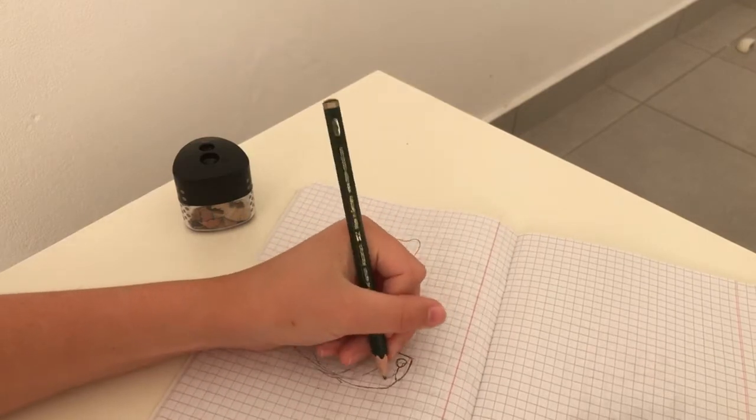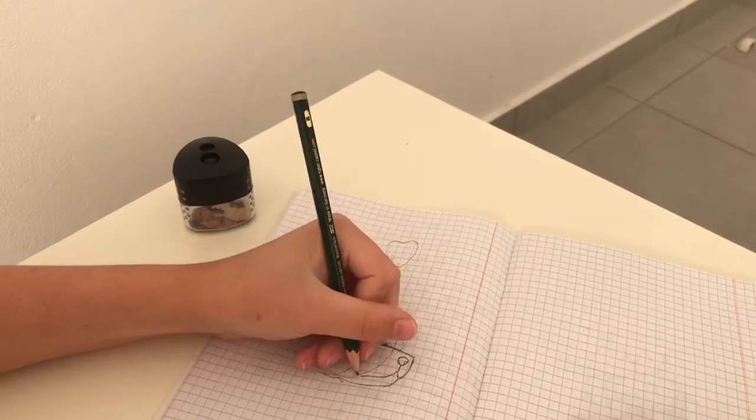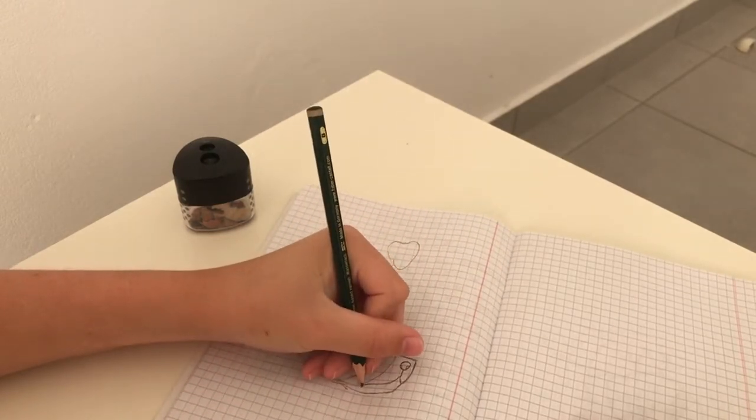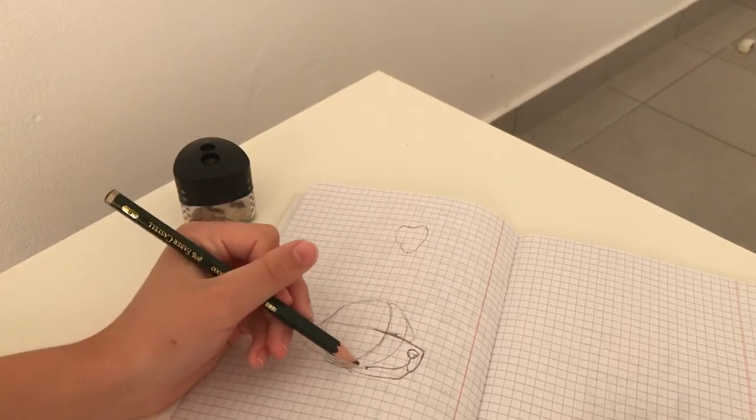I'm gonna start with the mouth by doing a straight line down, connecting that line with this dent over here, and then doing a smile or frown, whatever you want. And I'm just gonna do a line right here and with curves connect the line to the mouth.